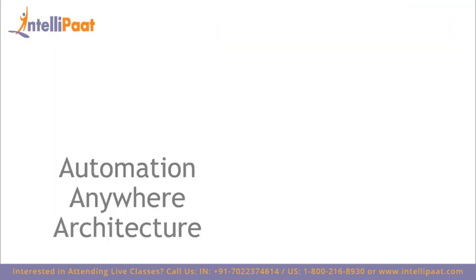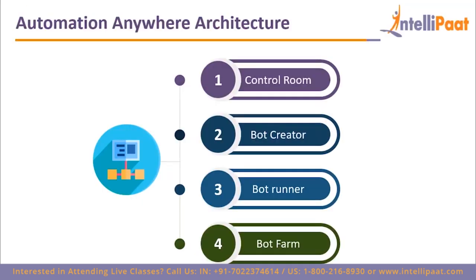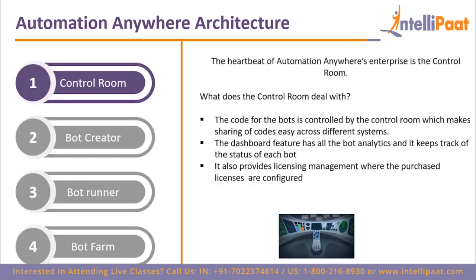Let's talk about Automation Anywhere architecture. The main components are the control room, bot creator, bot runner, and the bot farm. Let me give you a brief explanation of each of these components.